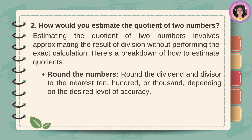Round the numbers. Round the dividend and divisor to the nearest 10, 100, or 1,000 depending on the desired level of accuracy.